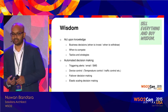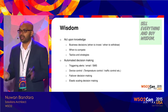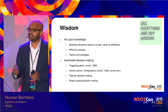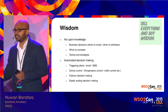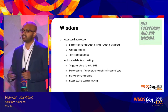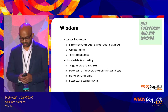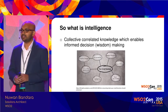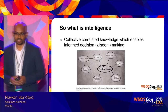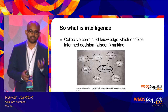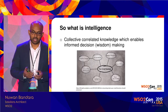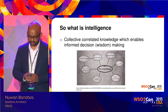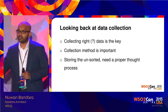You've probably seen business intelligence dashboards that provide pointers — some kind of probabilistic information — so you can make wise decisions on the business or operational aspect. So what is intelligence, the topic of my talk? Operational intelligence is having a collective, correlated knowledge which enables you to do informed decision-making — to make intelligent decisions.